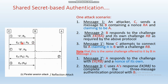Party B encrypts the random value RA and also sends its own random number RB back to C. Next, attacker C sends party B's identity and the random number RB to party A. Party A receives this and thinks the message is being sent from party B.